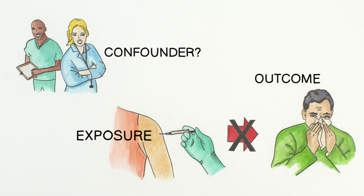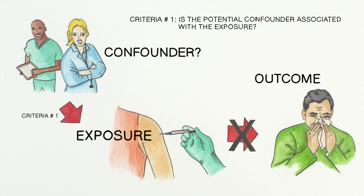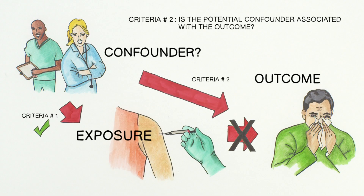Now we investigate for confounding by first asking: is the potential confounder associated with the exposure? In this example, yes — health professionals are more likely to get the flu vaccine to decrease their chances of getting the flu. Next, we ask: is the potential confounder associated with the outcome? In this example, yes — health professionals are more likely to get the flu because they are exposed to high numbers of sick people.